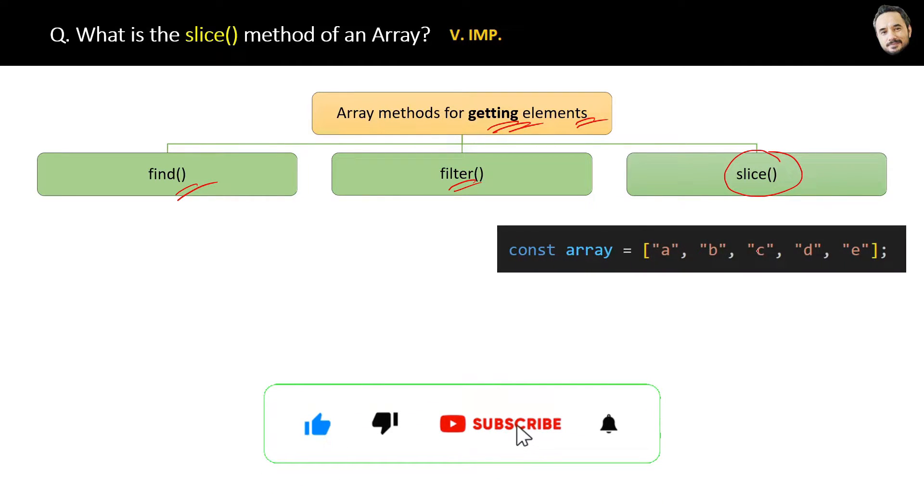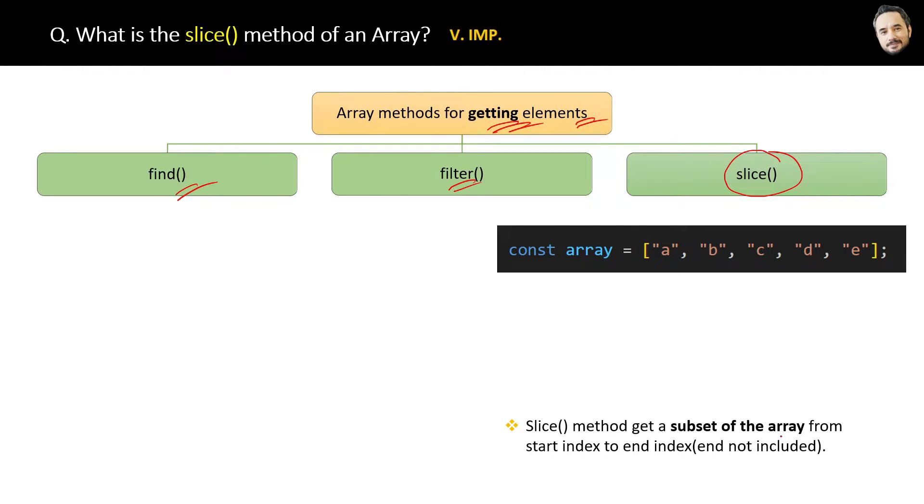Suppose you have an array of letters like this. The use of the slice method is: the slice method gets a subset of the array from the start index to the end index. Start index to end index, but remember the end element will not be included.